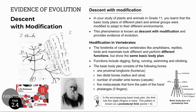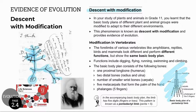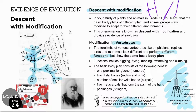Descent with modification is the term Darwin used to explain biological evolution. He believed all organisms are related through descent from one common ancestor — the idea of all organisms being part of one tree of life, as seen in his rough notes. An example of descent with modification is a basic body plan, like the pattern of bones in vertebrate forelimbs, modified to perform different functions in different environments. This is called the pentadactyl limb. In comparative anatomy we look at similarities and differences in body plans, and structures may be homologous or analogous.